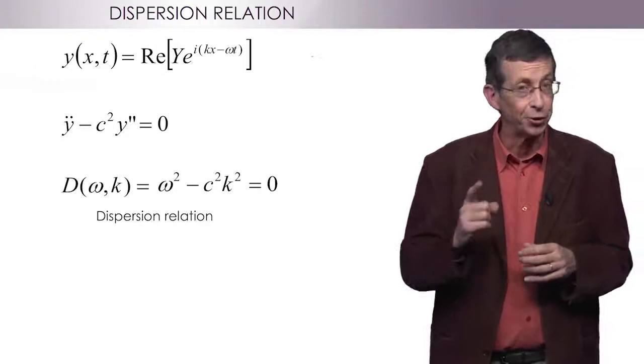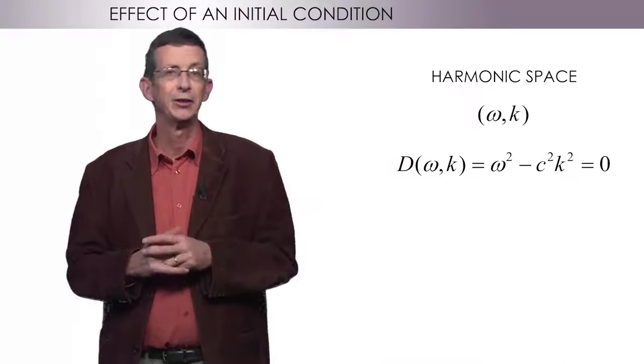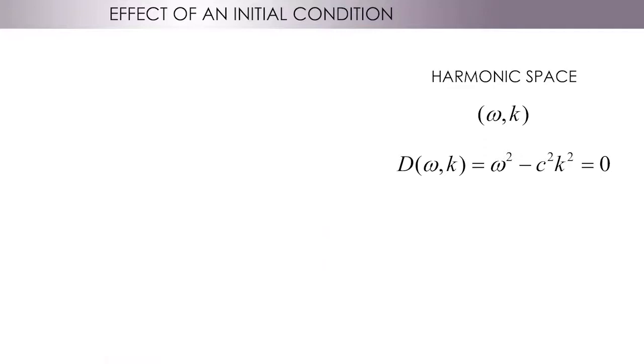This is the relation that connects the harmonic temporal variations defined by the frequency omega with the harmonic spatial variations defined by the wave number k. This is called the dispersion relation D of omega k. It is somehow the equivalent in the harmonic space, omega k, of the original equation in the x t physical space. In x t, the physical space, we had a dynamic equation with partial derivatives. In omega k, the harmonic space, we have a dispersion relation which is quite simple. Both are equivalent.